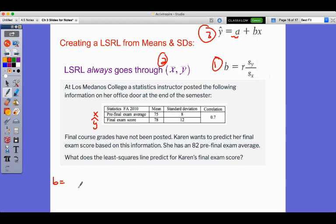So the first thing we do is we want to create B, which is R times standard deviation of Y over standard deviation of X, which would be 0.7, 12 over 8, which comes to 1.05.